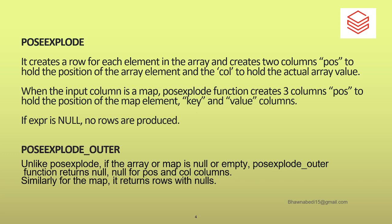We have already seen how explode works. I recommend watching all of the previous videos for a better understanding. In a similar way, posexplode will create a row for each element in an array, and along with that it will also create one more column named POS, which is nothing but Position. That position defines the position of an element in the array — 0, 1, 2, 3. For example, if I have an array of colors red, yellow, blue, green: red becomes position 0, yellow position 1, blue position 2, and green position 3.